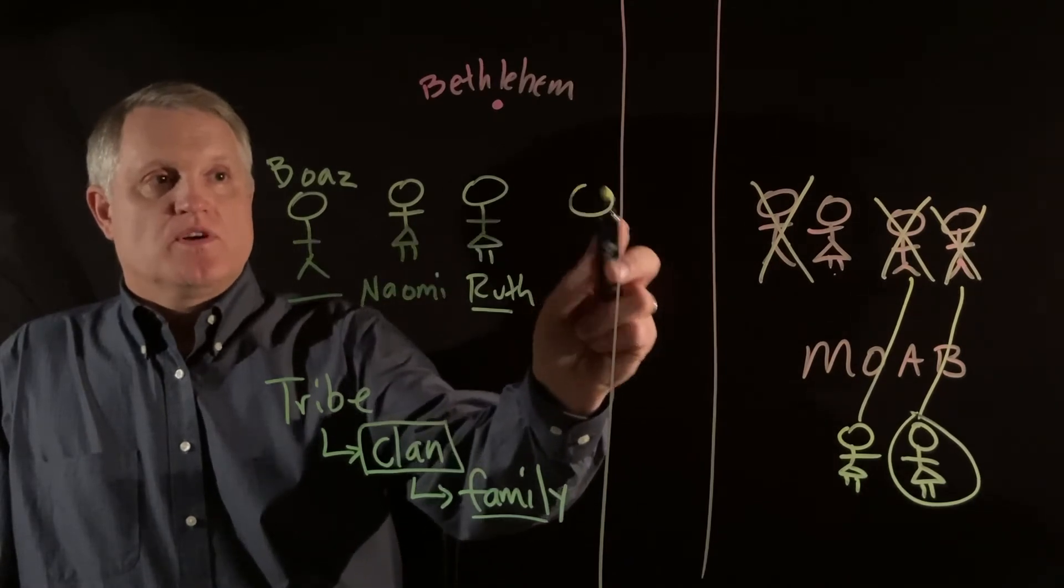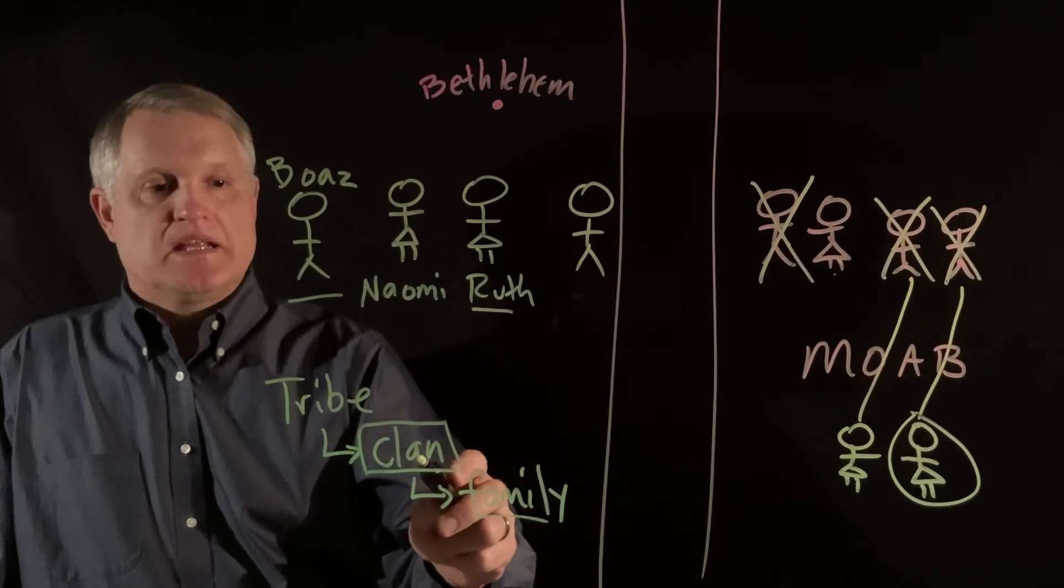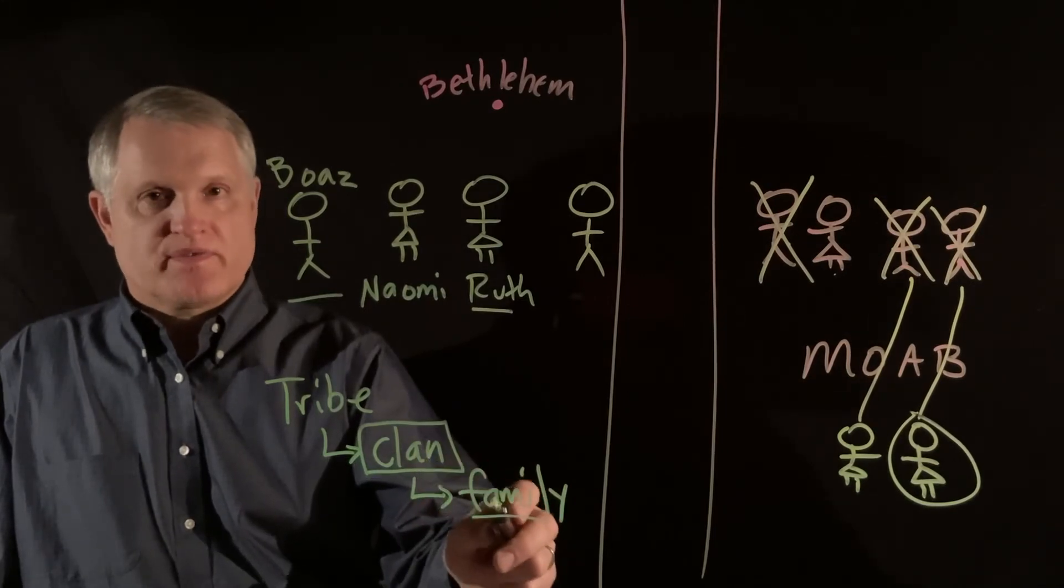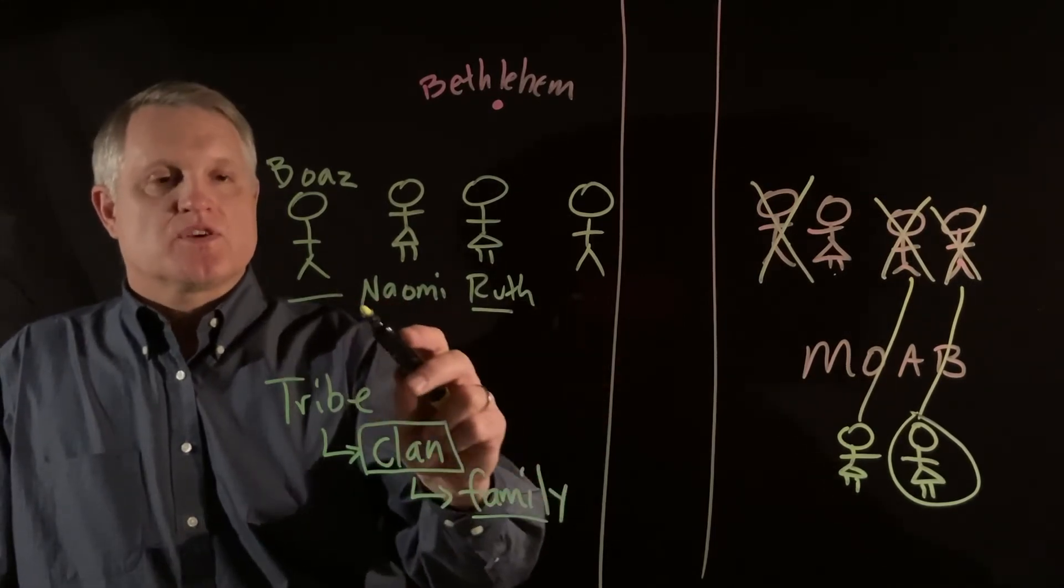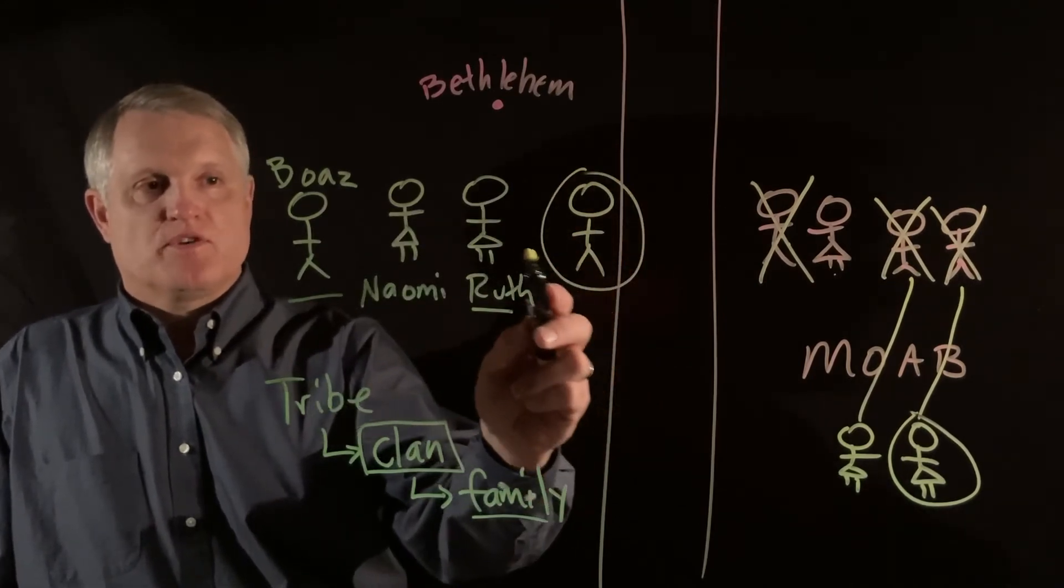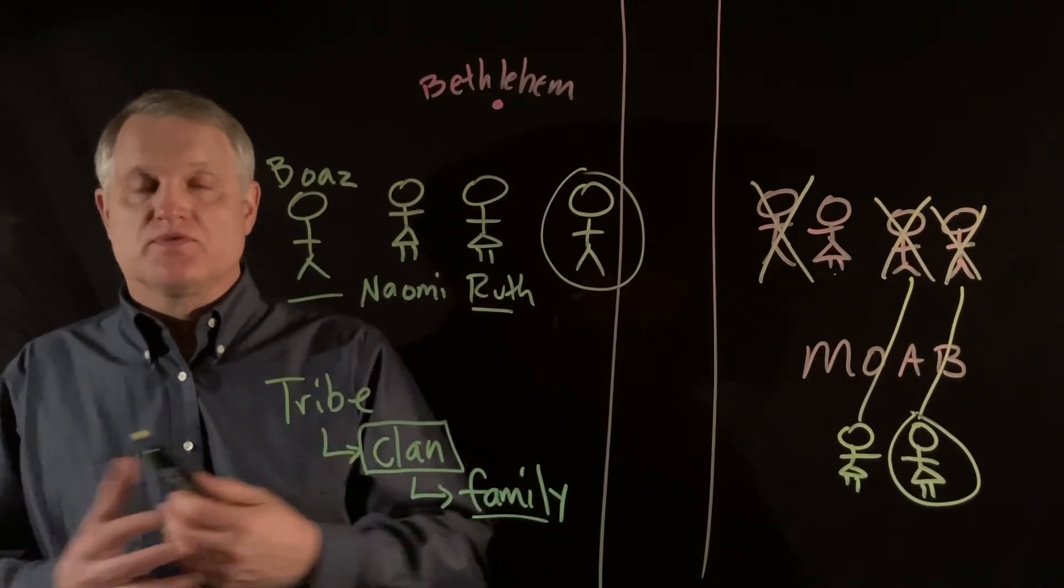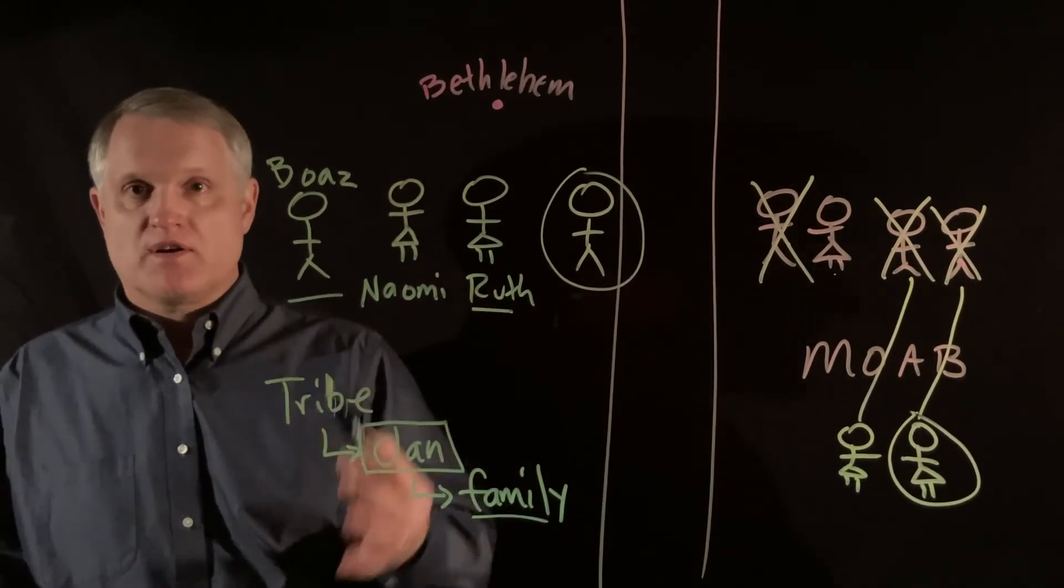As it is, he recognizes, Boaz does, that there is another man in the clan who is closer to the family than he is. So he tells this man, he's never named, you actually have first dibs, first right to marry Ruth and to give her children and start her family.